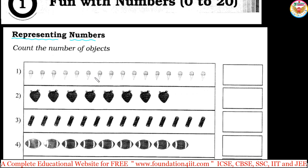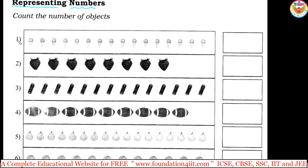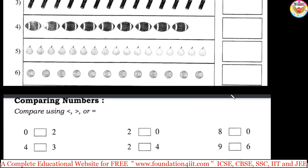Objects are given and you just count and tell me. First one: count the number of objects — one, two, three. By doing this the number list of numbers you'll be perfect. Next: one, two, three, four, five, six, seven, eight, nine, ten, eleven, twelve, thirteen, fourteen, fifteen, sixteen. You need to write the number in the box after counting the objects. Next: one, two, three, four, five, six, seven, eight. Just count the numbers and write the total in the box.